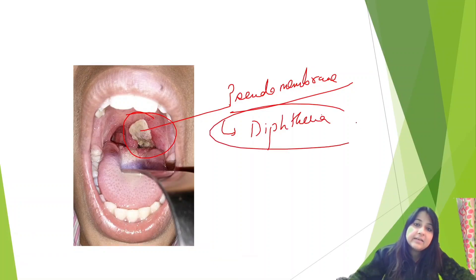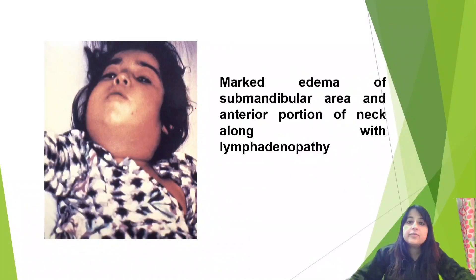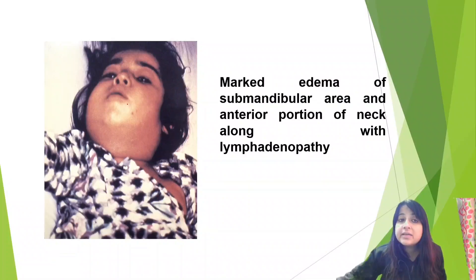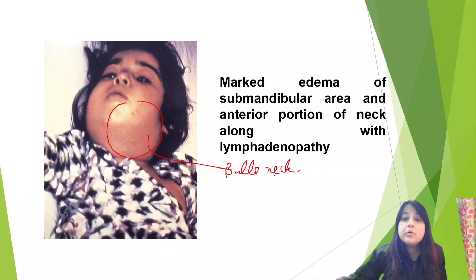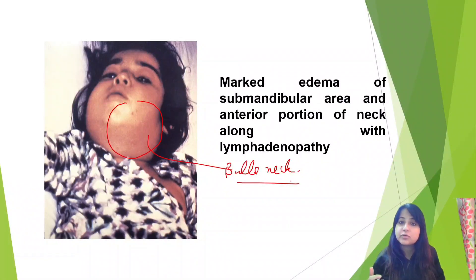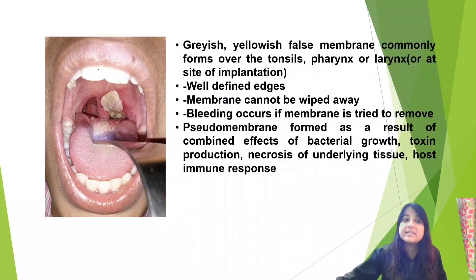This pseudomembrane is seen in diphtheria. This child is suffering from diphtheria. You can see there's bull's neck — marked edema of the submandibular area and anterior portion of the neck, along with lymphadenopathy. One of the most important presentations of diphtheria is the pseudomembrane.